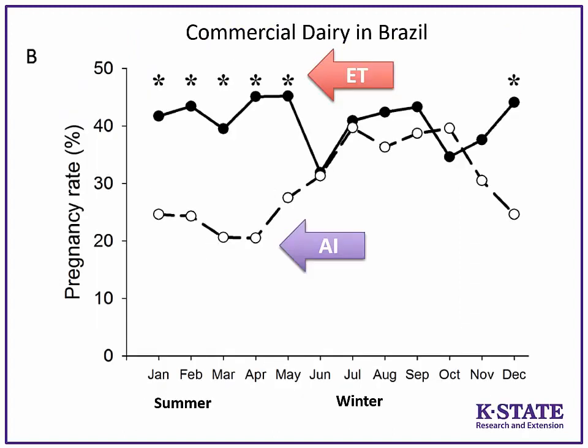Using embryo transfer to address heat stress: the solid line represents animals that received an embryo from a non-heat-stressed setting but were themselves heat-stressed recipients. Note these results are from south of the equator so seasons are reversed. Pregnancy rate was much higher in ET pregnancies than in AI cattle during summer, confirming the oocyte effects we've seen. The lower AI pregnancy rate during summer returns to a higher level in winter.